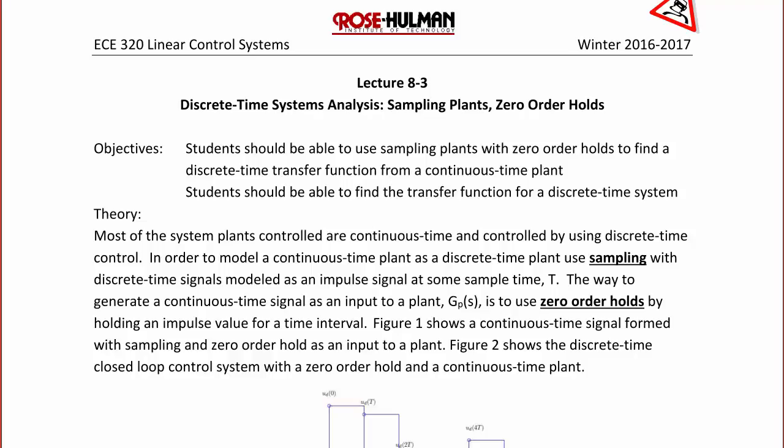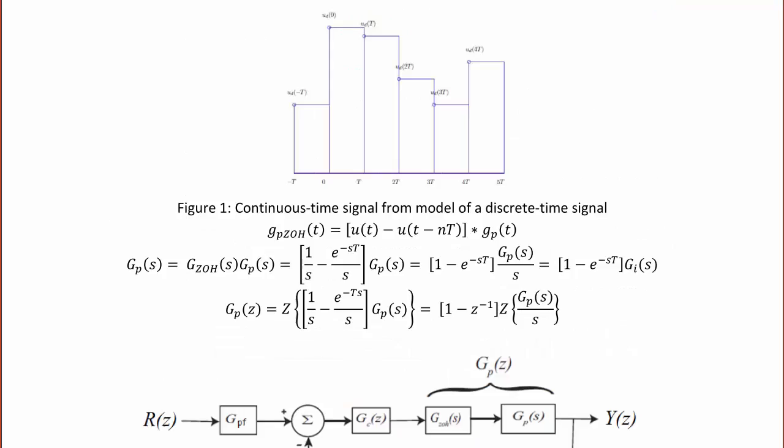Figure 2 shows a discrete time closed-loop control system with a zero-order hold and a continuous time plant. What you should see in this figure is that at every interval of T, there is a zero-order hold, which is basically a very broad rectangular shape — a zero-order hold pulse — to model the continuous time signal.